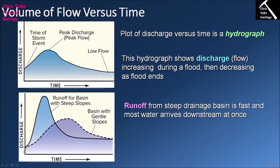In contrast, if your drainage basin has more gentle slopes, it takes longer for the water to enter the river. In this instance, the peak discharge will be lower than with steep slopes because the water is spread out over a longer time period. However, the peak discharge will be much longer in duration — you get a lower but much broader peak.